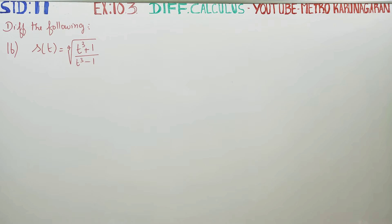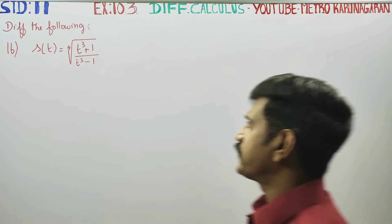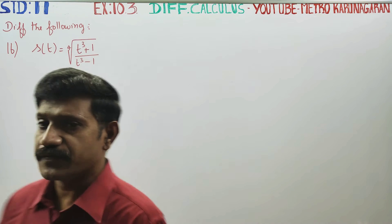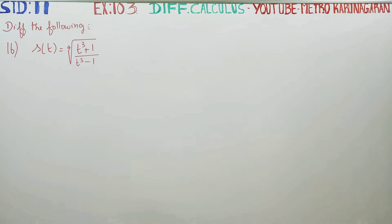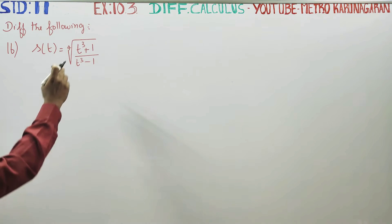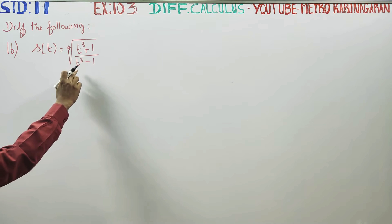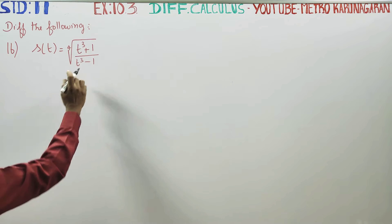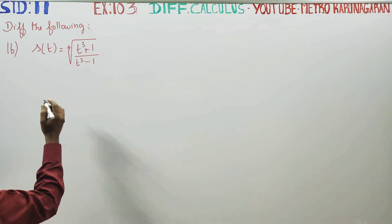Dear Learn Standard students, in exercise number 10.3, sum number 16, we are going to differentiate s of t, which is equal to the 4th root of (t cubed plus 1) divided by (t cubed minus 1).